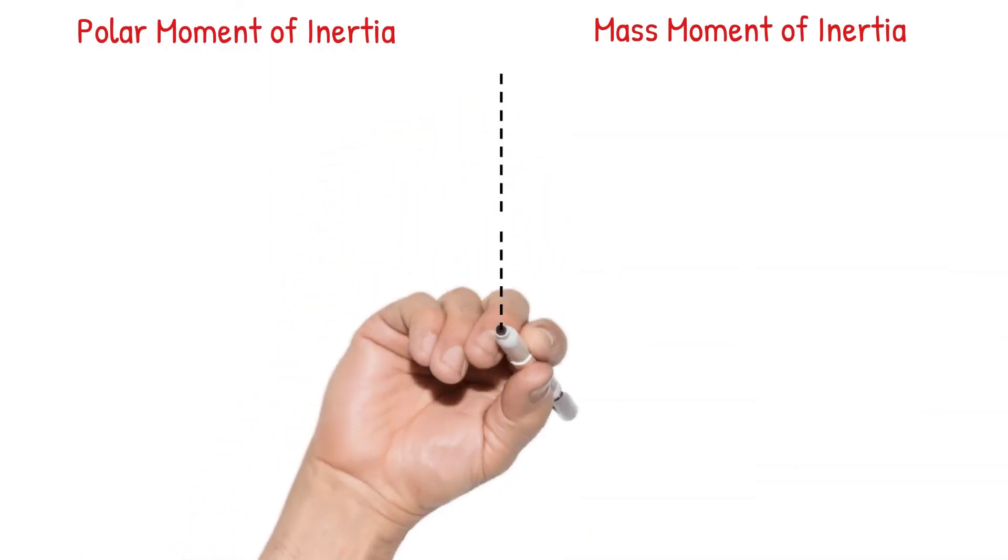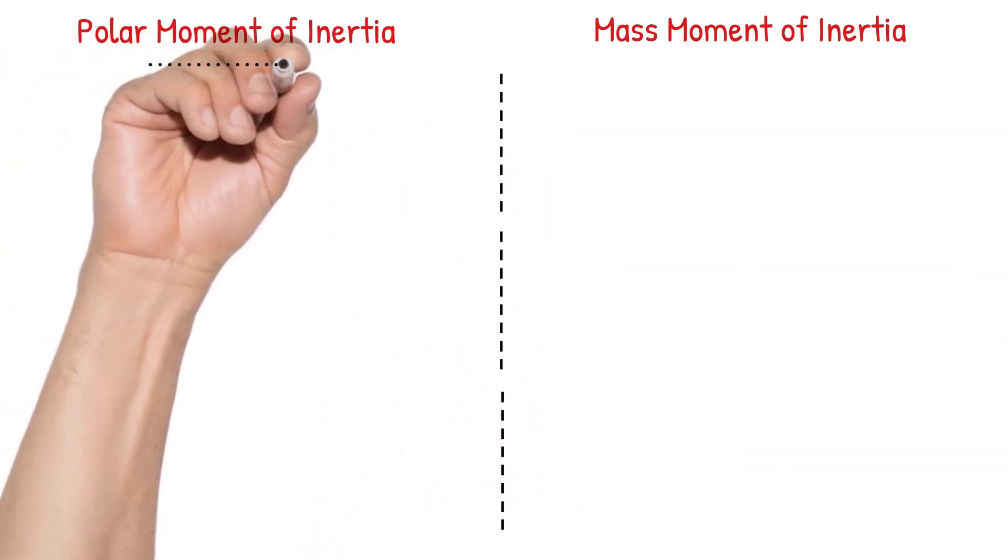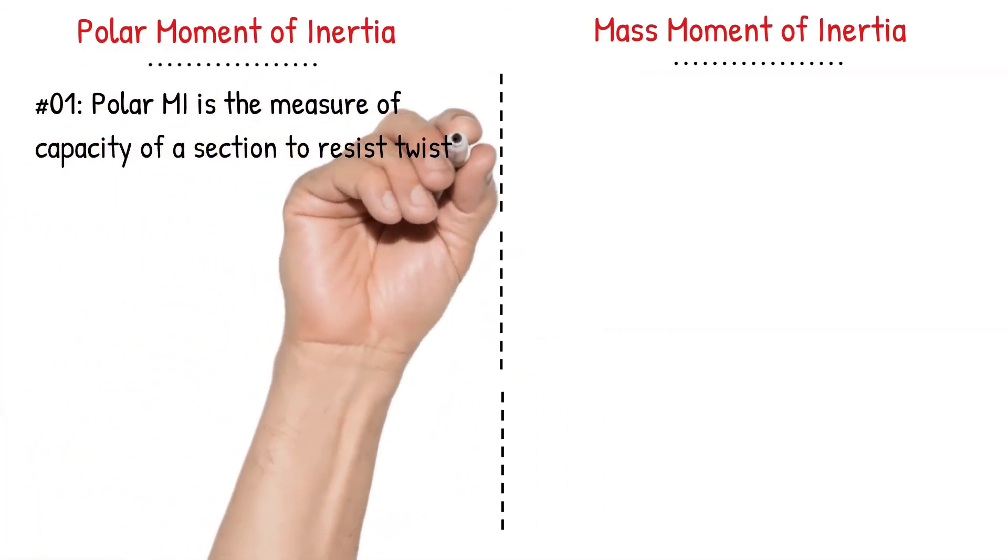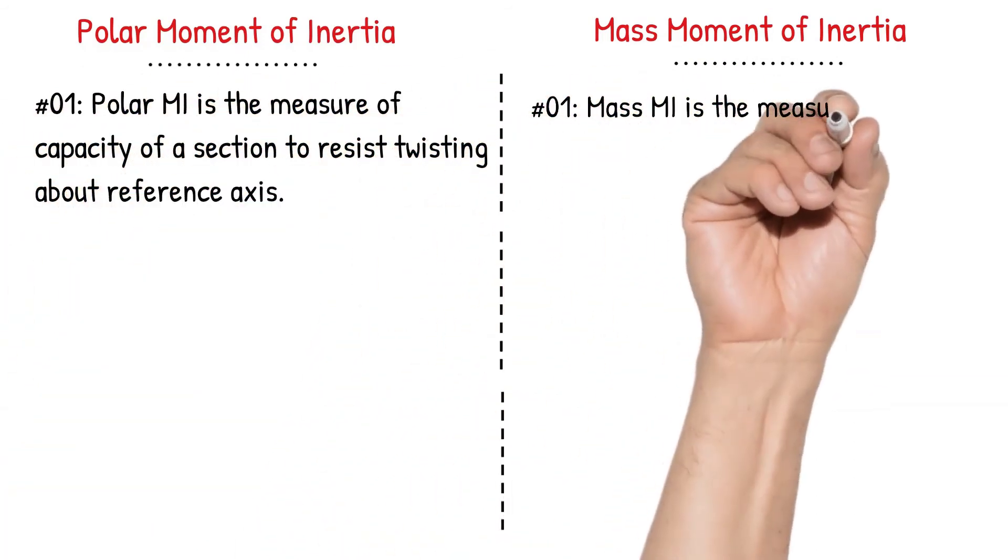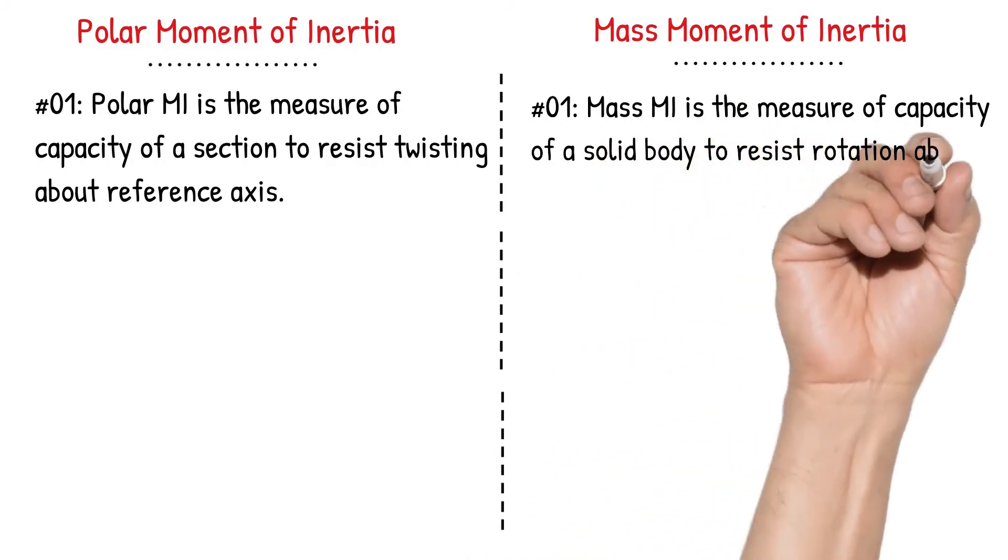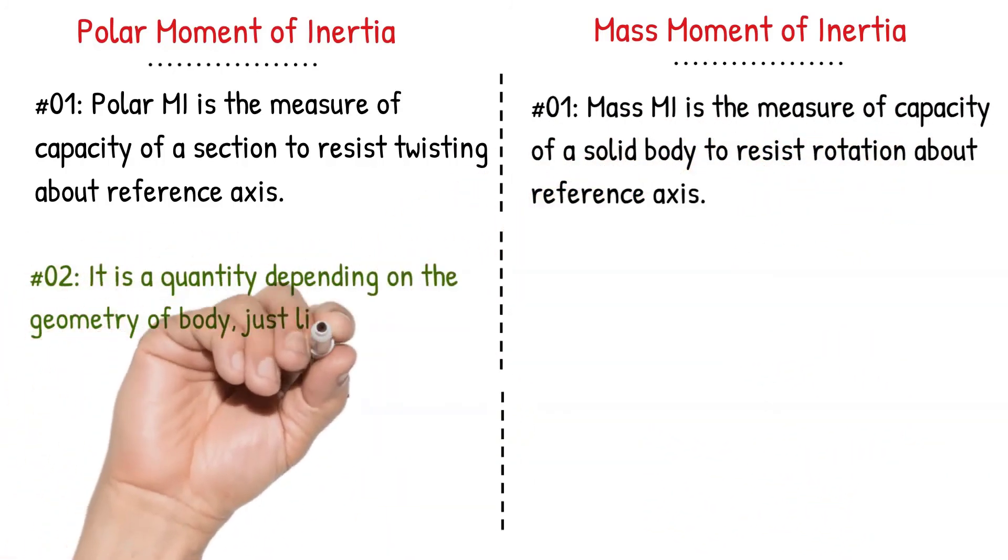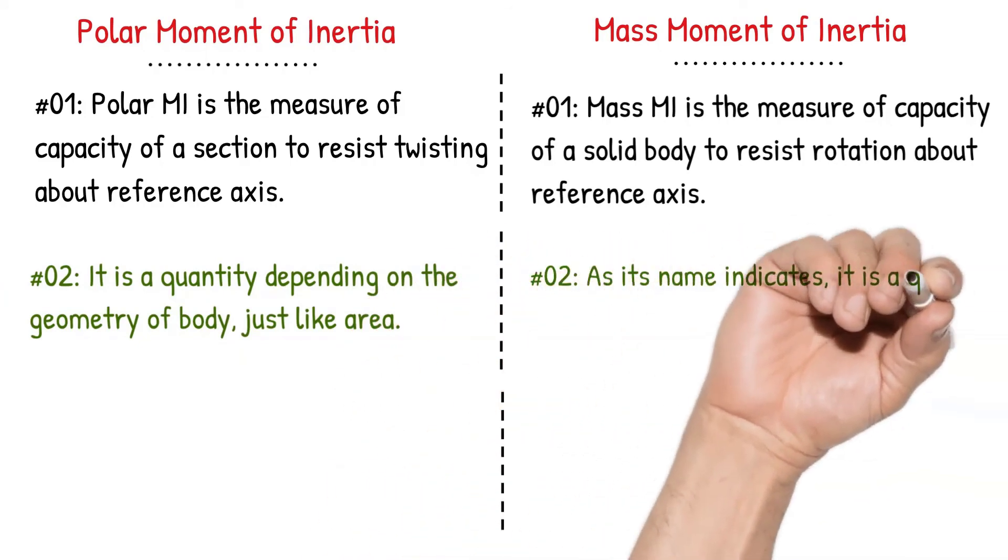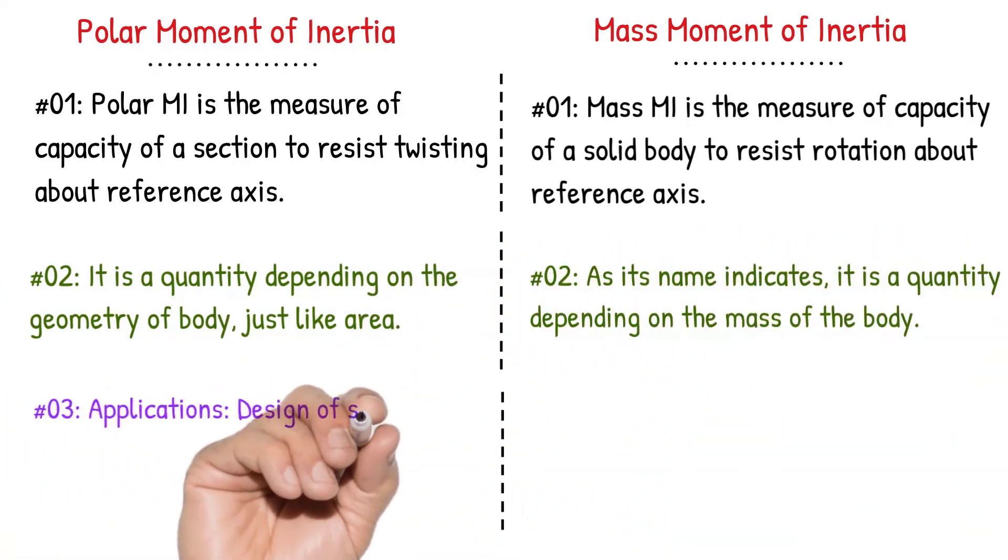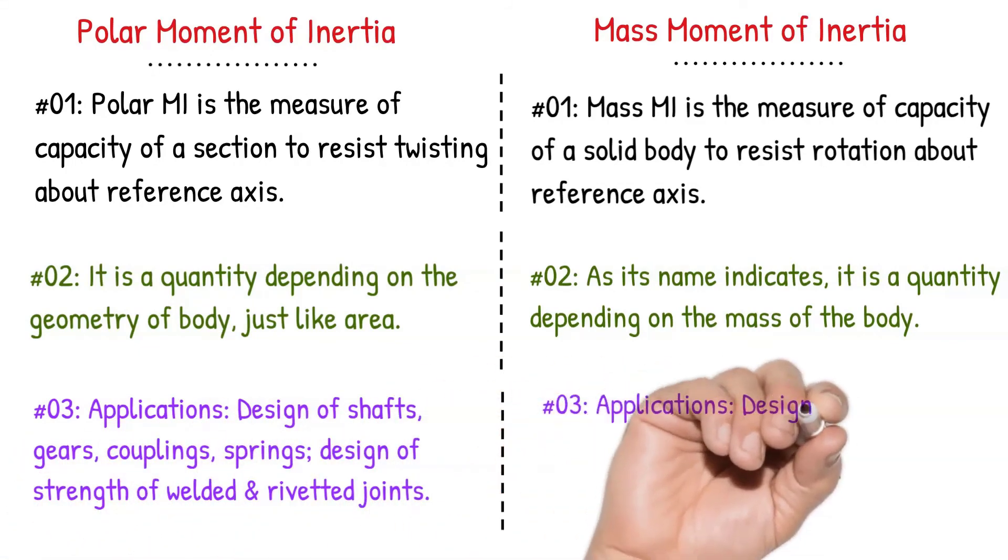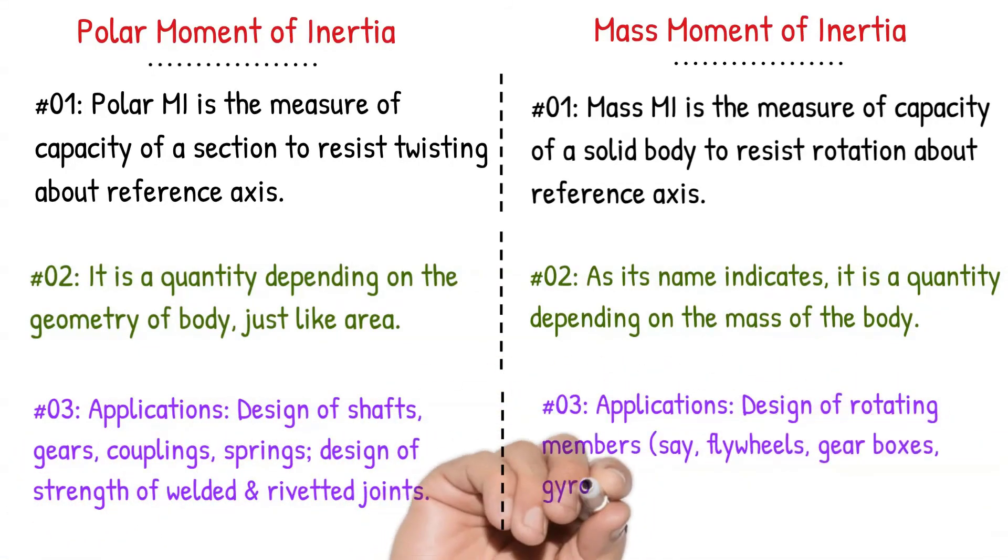Finally, the key differences between polar moment of inertia and mass moment of inertia are summarized for your preference and better understanding. As you could see, polar moment of inertia is the resistance against twisting whereas mass moment of inertia is resistance against rotation. You could find their applications as well.